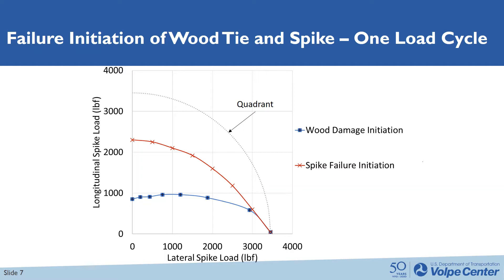Both the magnitude of the spike load to initiate the wood damage and the spike failure in the longitudinal direction is smaller than in the lateral direction. For example, looking at the red curve showing spike failure initiation, only 2,300 pounds of longitudinal force is able to initiate the spike failure. But about 3,500 pounds is required if the load is applied in the lateral direction to initiate the spike failure.